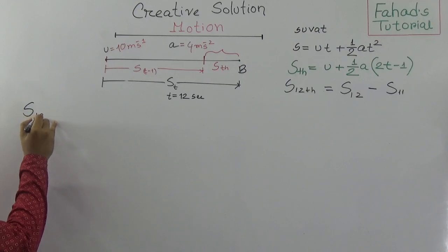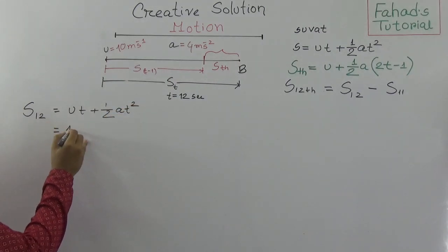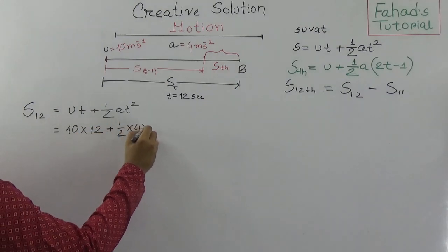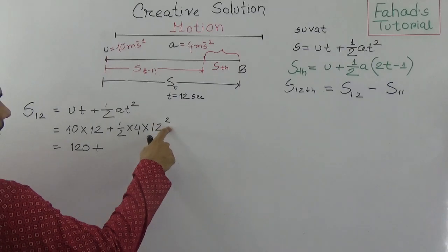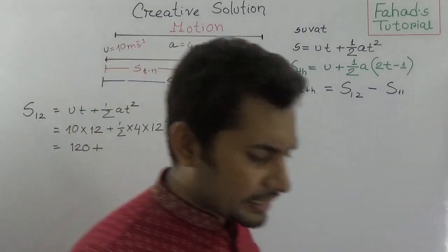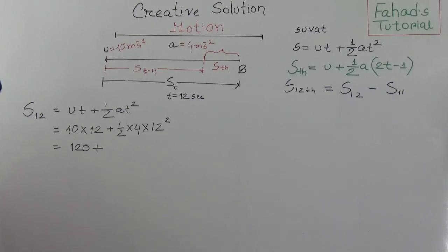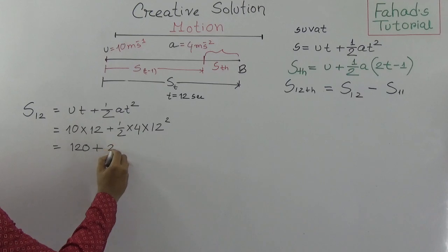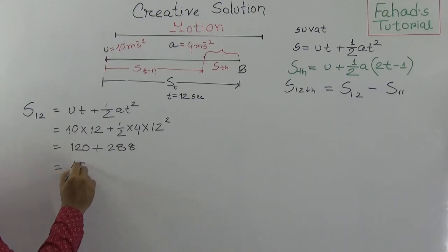For S(12): using S = UT + ½AT², with U = 10, T = 12, A = 4. That gives 10×12 + ½×4×12² = 120 + 2×144 = 120 + 288 = 408 metres.